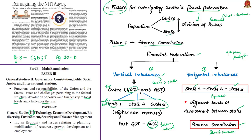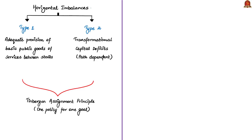To propose the second pillar, the authors explain that horizontal imbalance has two sub-types: Type 1 is about providing adequate basic public goods and services between different states, while Type 2 is about transformational capital deficits — when investment received is less than what is required to build infrastructure. This Type 2 imbalance is historically conditioned or path-dependent. To address both types, the authors say the Tinbergen assignment principle should be followed: for each policy target, policy makers need at least one policy tool.